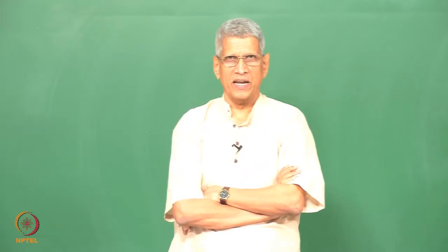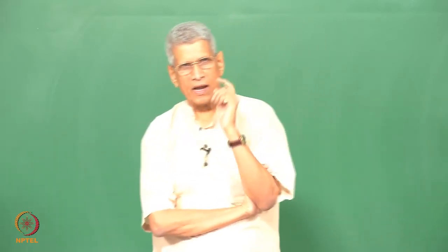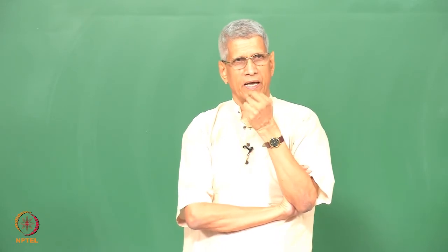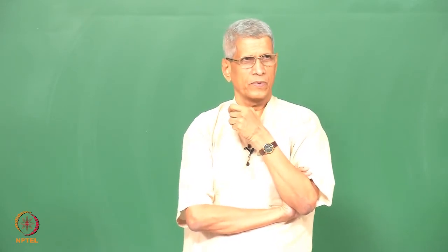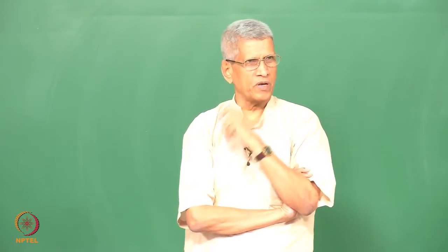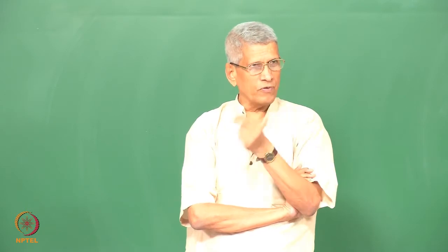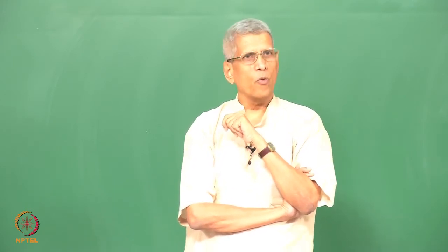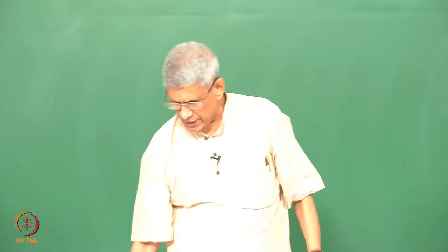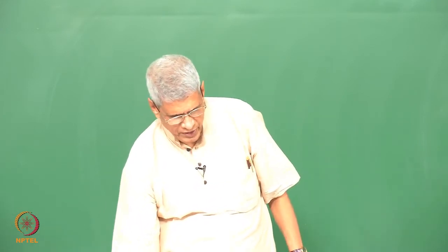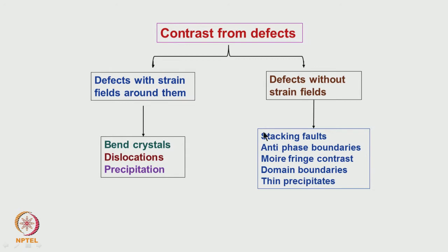Welcome to this course on diffraction and imaging. In the last class, we looked at analysis of defects, especially planar defects — the various types of defects, the defect vectors associated with them, and what sort of contrast they will give in the microscope. Today we will talk about defects which have got strain fields associated with them, what contrast they give, and how to analyze and interpret the results.